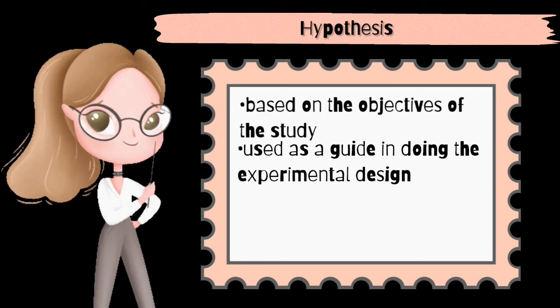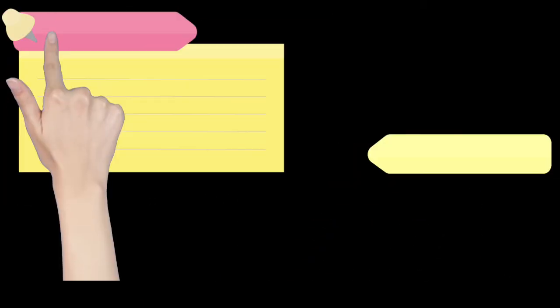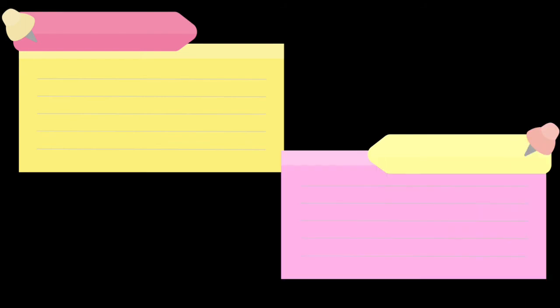There are several ways to state the hypothesis, but usually, the null hypothesis is used. Let us recall the two types of hypothesis that were discussed in your grade 7. The two types of hypothesis are null hypothesis and alternative hypothesis.